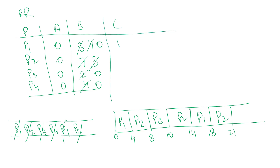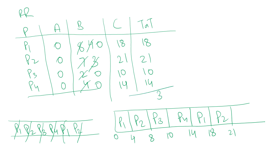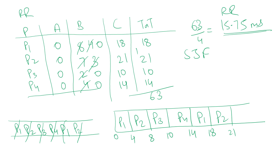The completion times for Round Robin are: P1 = 18, P2 = 21, P3 = 10, and P4 = 14. Since the arrival time is zero for all processes, the turnaround times equal the completion times. Summing them up: 18 + 21 + 10 + 14 = 63. The average turnaround time is 63 / 4 = 15.75 milliseconds for the Round Robin algorithm.